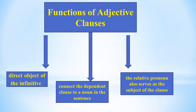Adjective clauses can also start with relative adverbs: where, when, and why. These connect the dependent clause to a noun in the sentence, and the relative adverb modifies the verb in the dependent clause. For example: 'That is the bench where you and I were supposed to meet.' 'Six o'clock was the time when we were supposed to be here.' 'That is the reason why I couldn't meet you.'